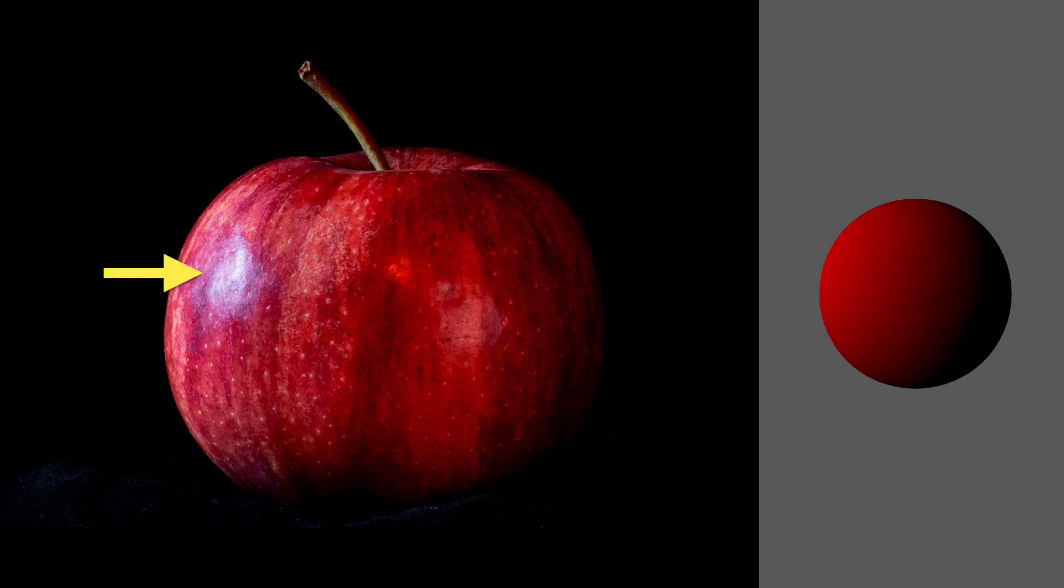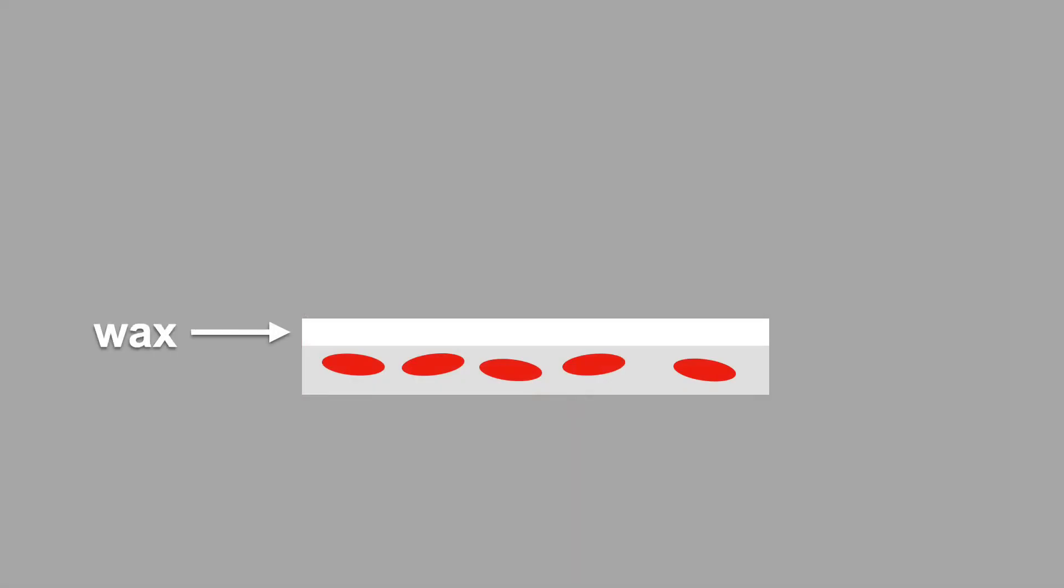Okay, we can now model our apple using a diffuse red color. But how about that specular highlight on the left? The highlight is not red. Why not? The highlight comes from the shiny layer of wax on the surface of the apple, which specularly reflects some of the light before it hits the pigments. That's why the highlight is the color of the light source instead of being red.